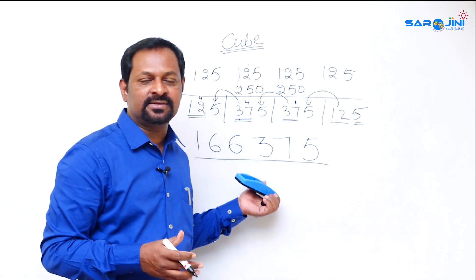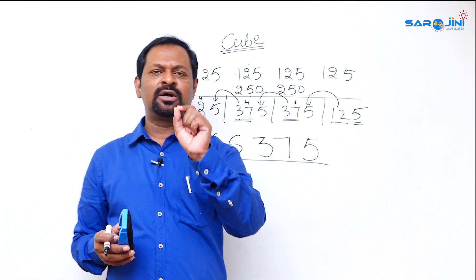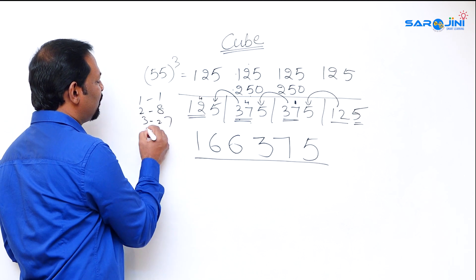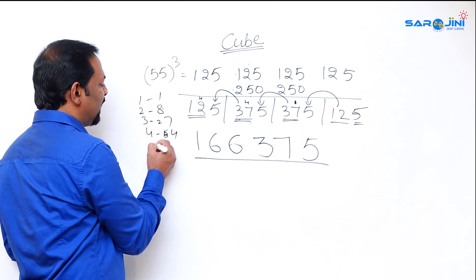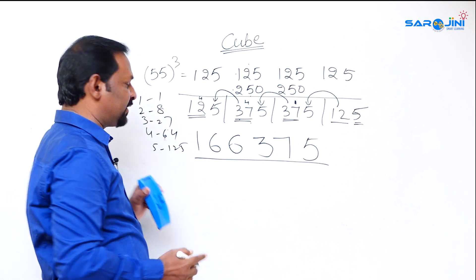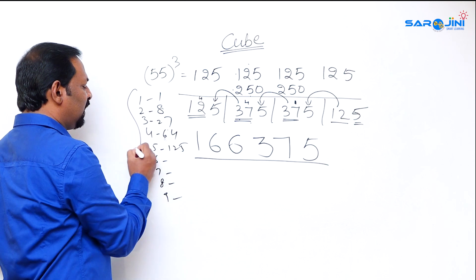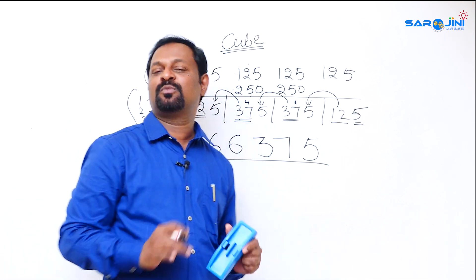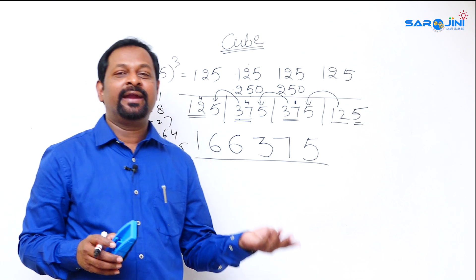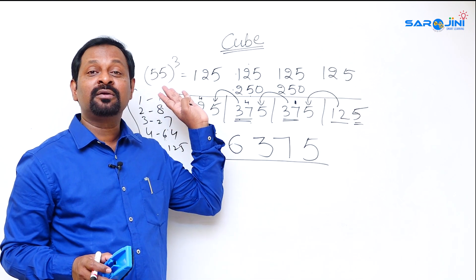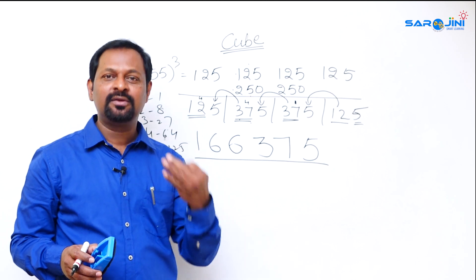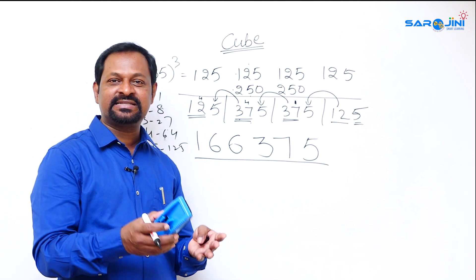To use this method you need to learn 1 to 9 cubes: 1³ = 1, 2³ = 8, 3³ = 27, 4³ = 64, 5³ = 125, and similarly 6³, 7³, 8³, 9³. This is enough to handle cubes up to 99. We have discussed cubes beginning with 1, cubes ending with 1, and now cubes of repeated-digit numbers: 11, 22, 33, 44, 55, 66, 77, 88, 99.